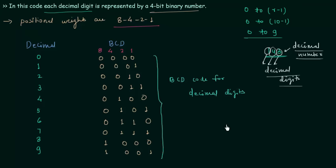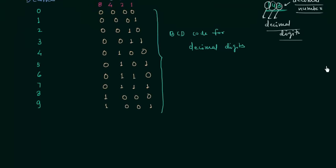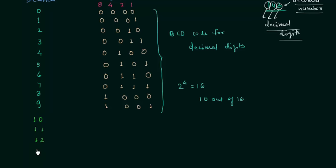Now we will move to invalid BCD codes. These 10 codes are valid BCD codes, but using 4 bits gives 2 to the power 4, which equals 16 total possibilities. We are only representing 0 to 9, that is 10 out of 16. The remaining cases — when the number is 10, 11, 12, 13, 14, and 15 — are invalid, because they are decimal numbers, not decimal digits.